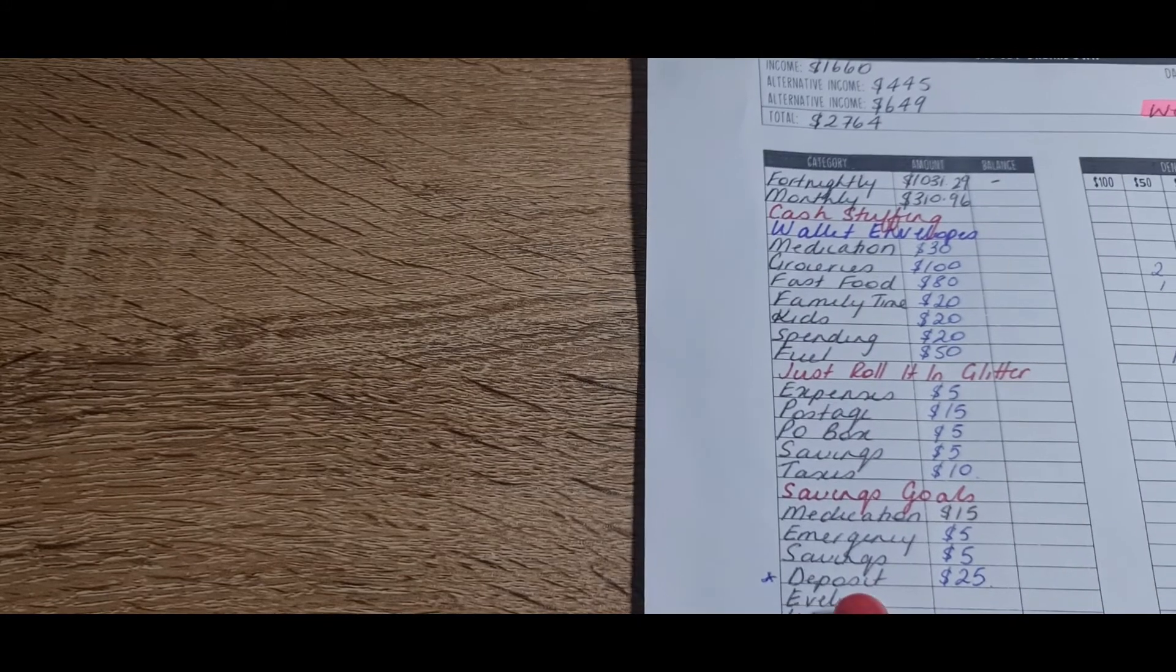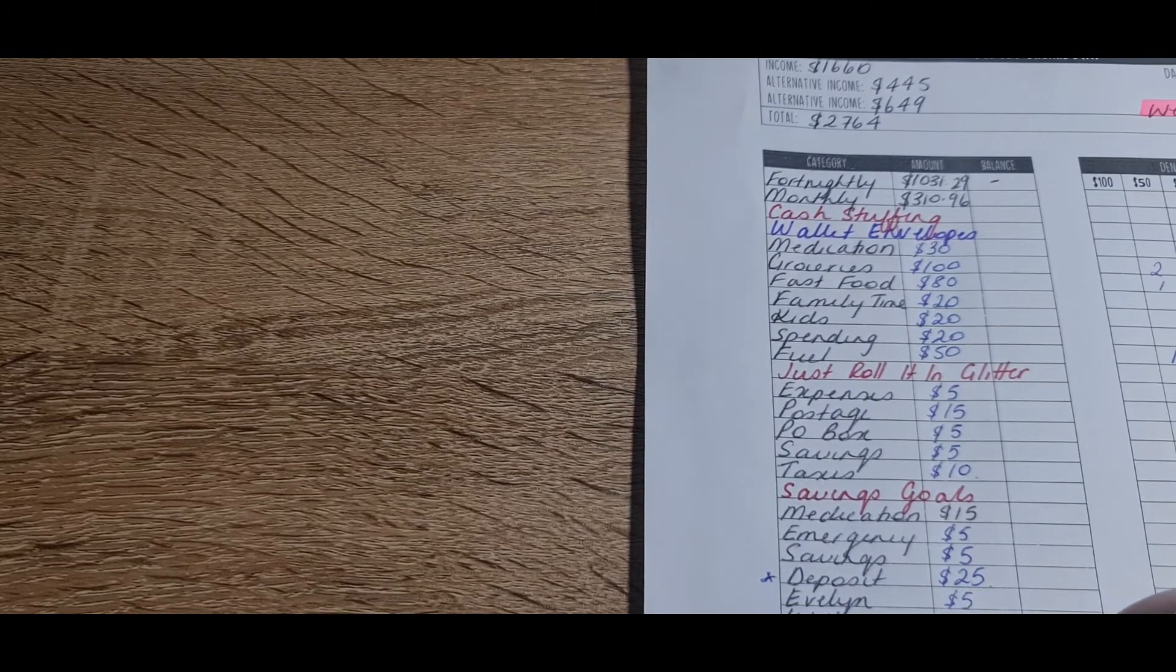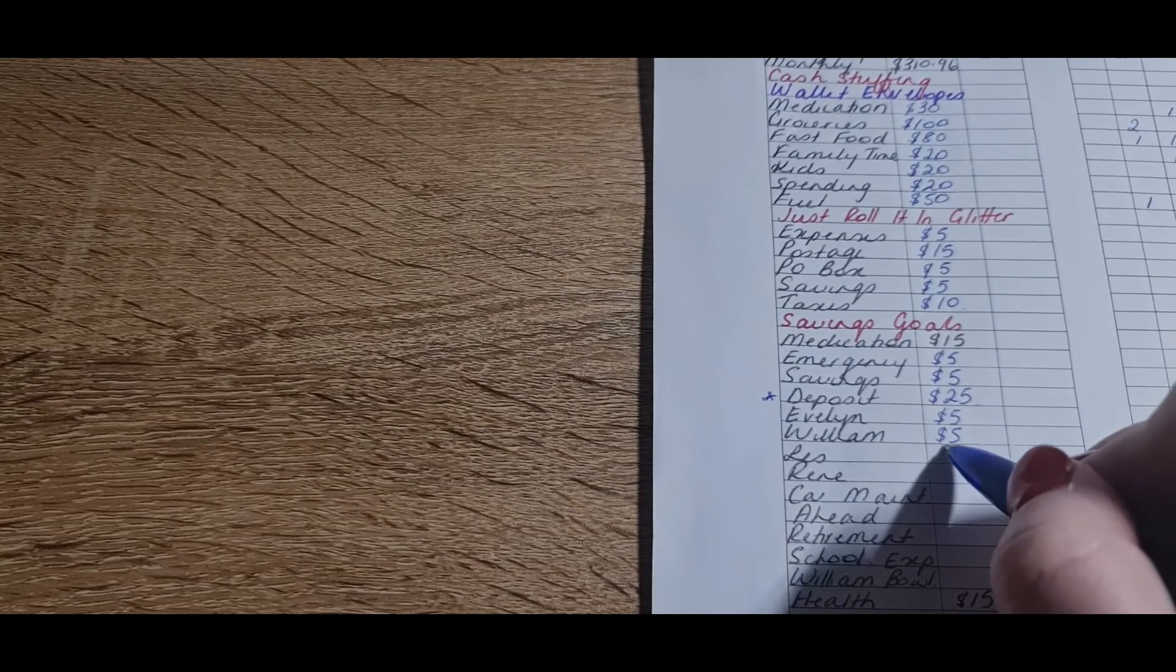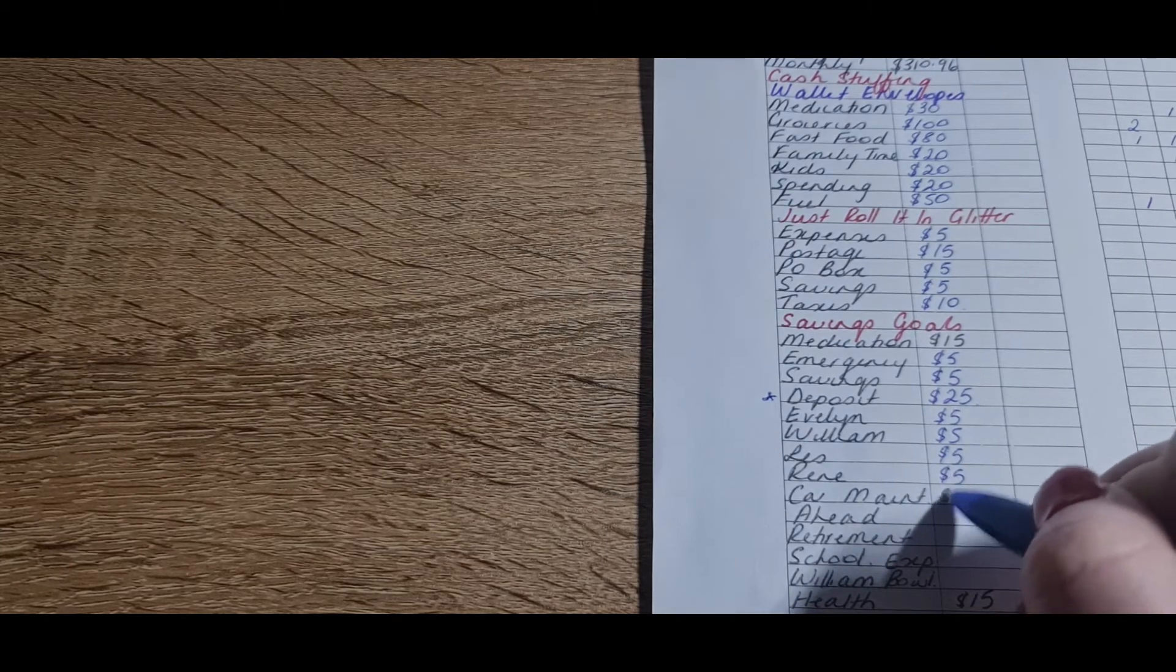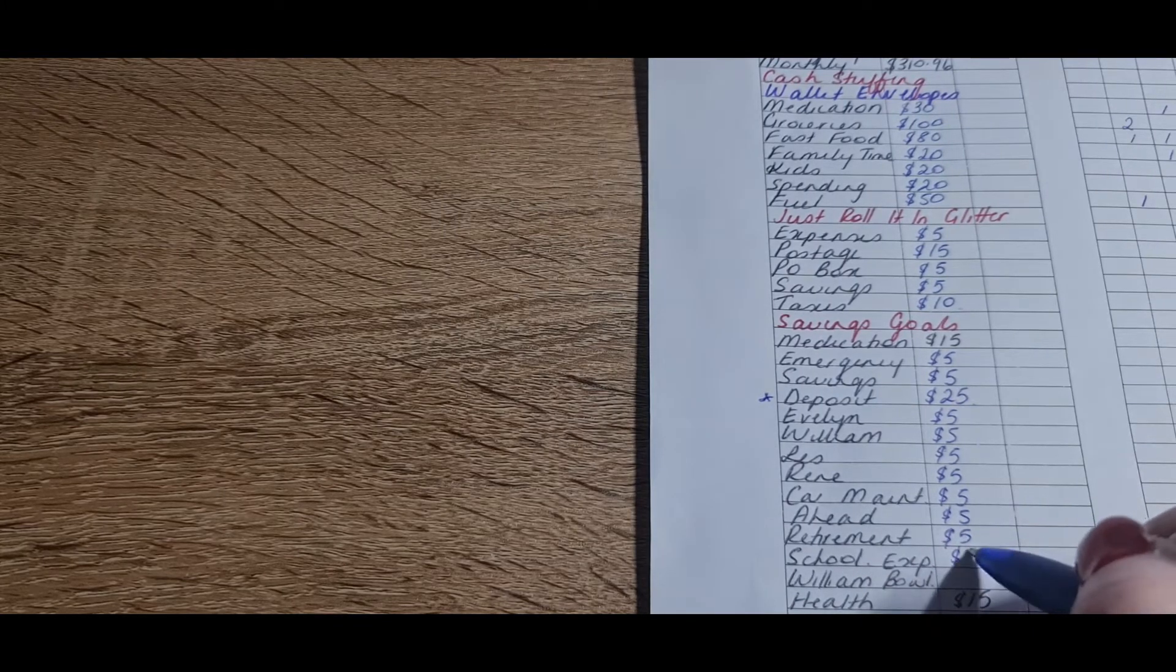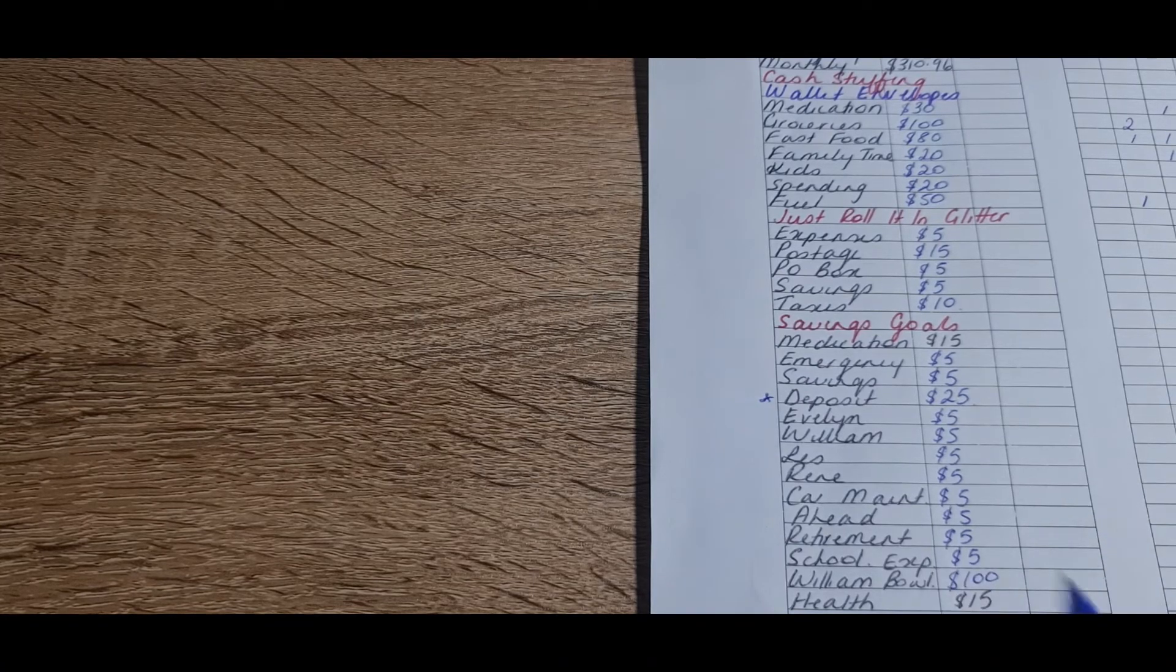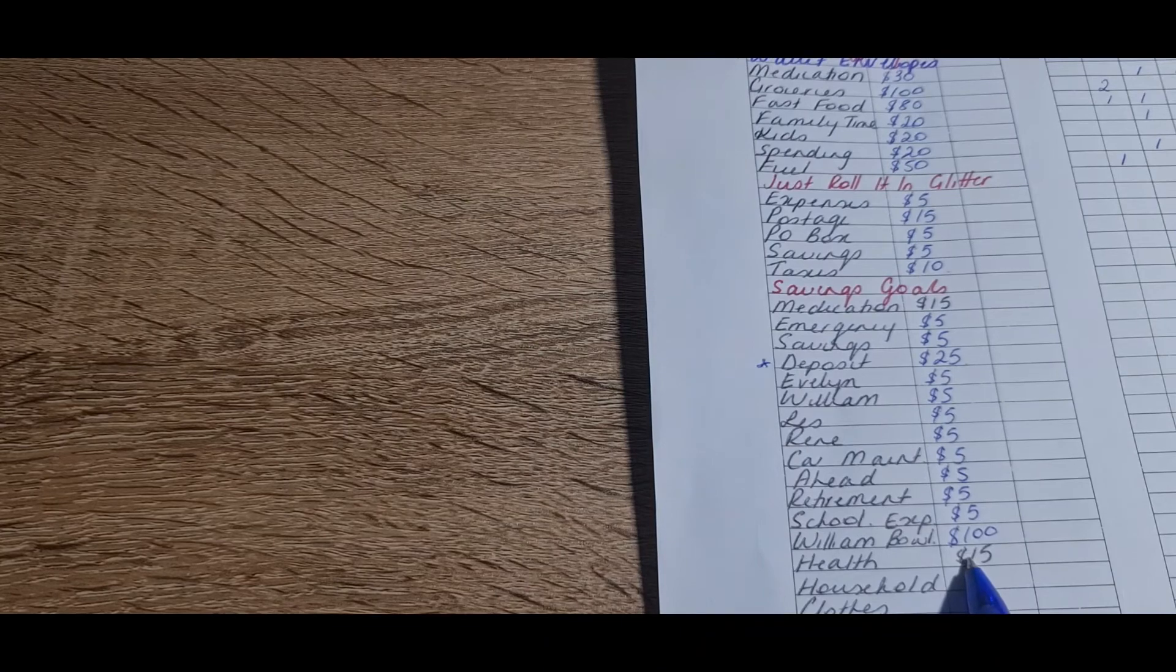But you'll see that when I actually get to the cash stuffing video. But this is one of the ones that I'm going to have to pull money out of. So Evelyn, my daughter, is getting $5. My son is getting $5. I am getting $5. Car maintenance, $5. Head, $5. Retirement, $5. School expenses, $5.